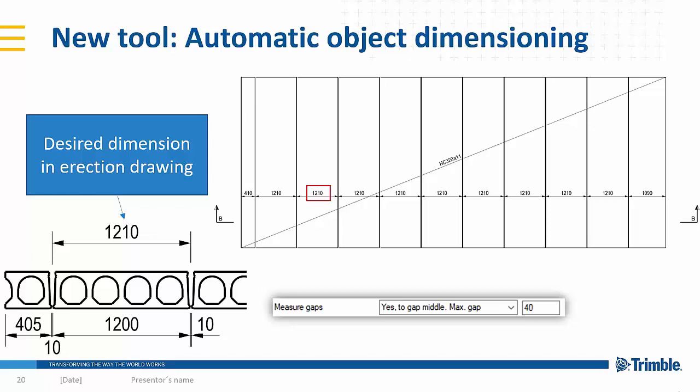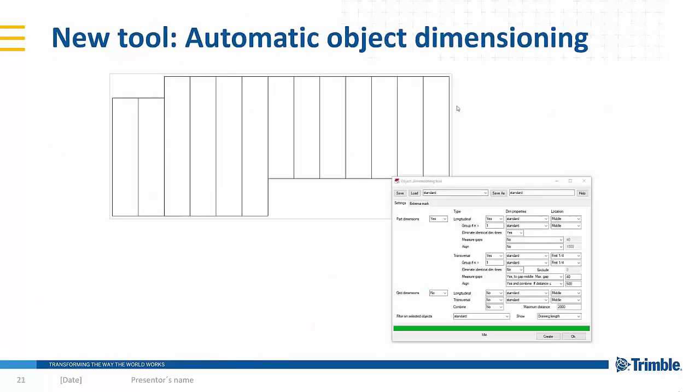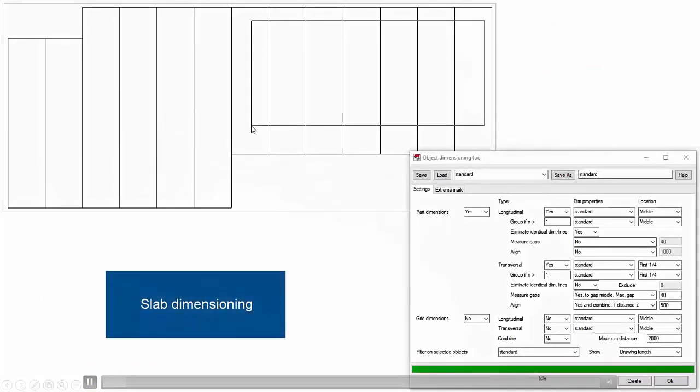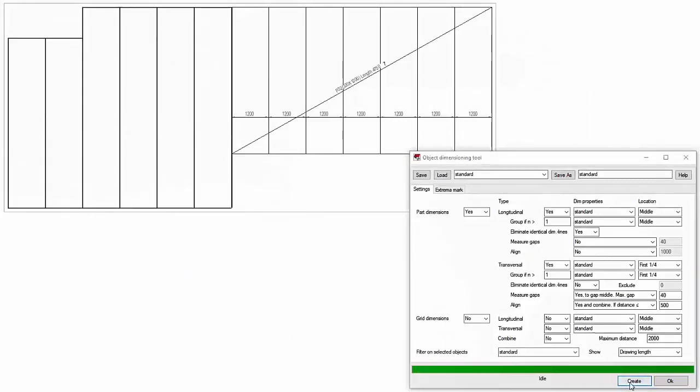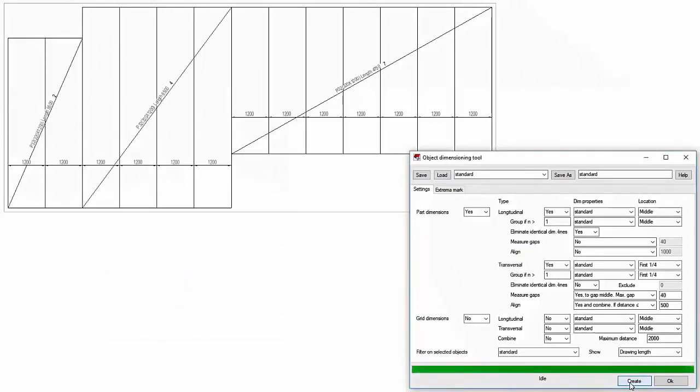This has been requested a lot because manually this is a bit tedious. Here is a small video of the tool in action. Basically select the slab example, select the tool, press create button, and it will add all of those dimensions and the extrema mark automatically.